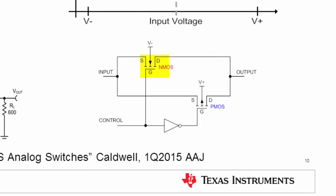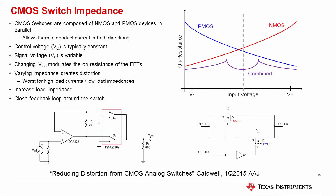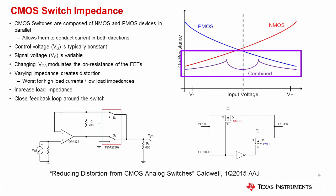CMOS switches normally have an NMOS switch and a PMOS switch in parallel, with their sources and drains connected together. As the switch input voltage gets more positive, the NMOS gate-to-source voltage decreases while the PMOS gate-to-source voltage increases, decreasing PMOS resistance and increasing NMOS resistance. Combining the two parallel impedances produces the combined on-resistance curve shown in purple. A constant theme in low distortion design is that any time an impedance in the signal path changes with voltage, it will produce distortion, so switches placed in series with the output load will often produce distortion.